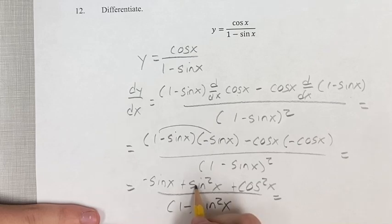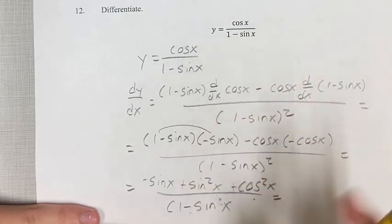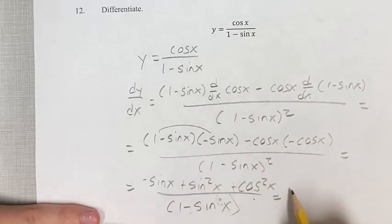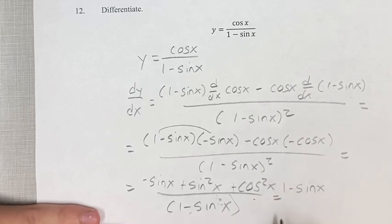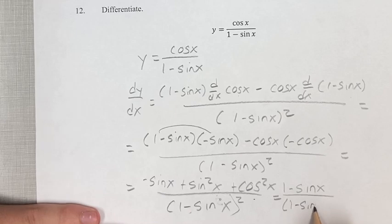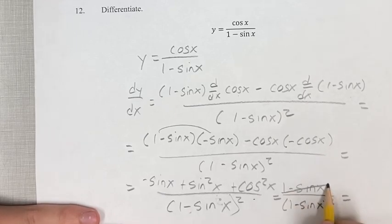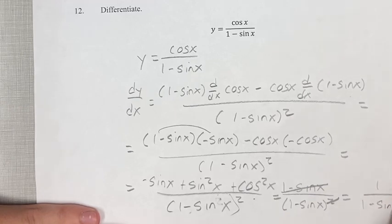Last step, sine squared x plus cosine squared x is 1. So we have negative sine x plus 1, or you can write that as 1 minus sine x. So we have 1 minus sine x over 1 minus sine x squared. This cancels with that, and we have 1 over 1 minus sine x.